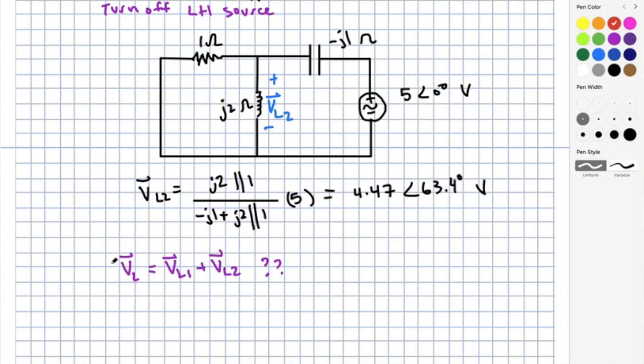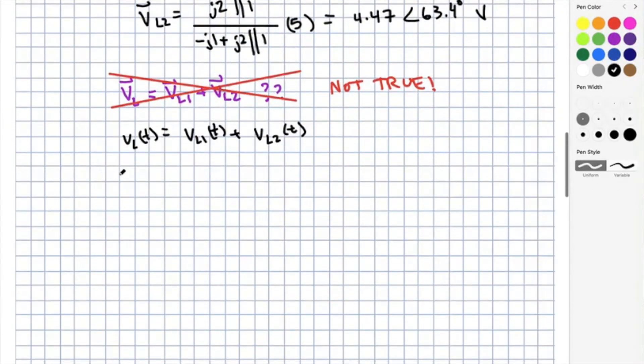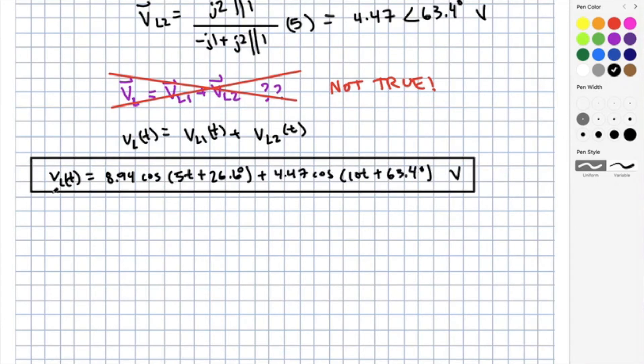Now, in DC, we could just say that the voltage we're looking for is the sum of these two voltages we've calculated. However, in AC, this is not true because these voltages depend entirely on the frequency which I worked in. So what I need to do is I need to find the time domain voltage, which is equal to the sum of each of the time domain voltages. So I must convert them back to the time domain. What we'll find is that VL of T is equal to 8.94 cosine 5T plus 26.6 degrees plus 4.47 cosine of 10T plus 63.4 degrees volts. What's interesting here is that I see that the output then has two frequency contributions. This is exactly why we must do superposition.